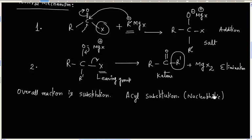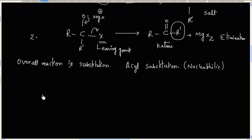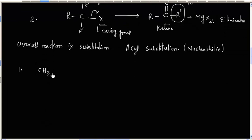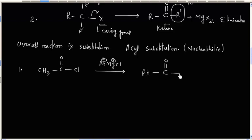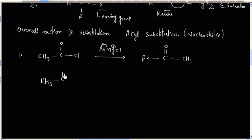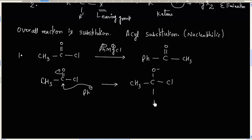It is easy to write the product: in the first step we add R', and in the next step we release the leaving group. For example, let us take CH₃COCl treated with PhMgCl. The Ph group will be attached to the carbonyl carbon. So we will have Ph-C(=O)-CH₃ as the product. That is, CH₃COCl is written as the acid chloride, Ph⁻ attacks, the intermediate opens up, and then Cl leaves, giving us the ketone.